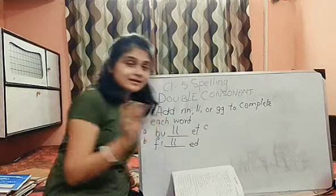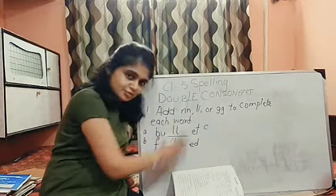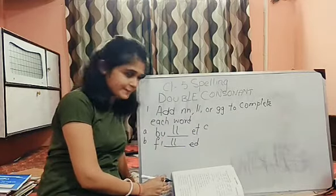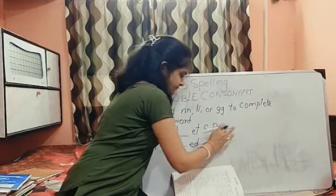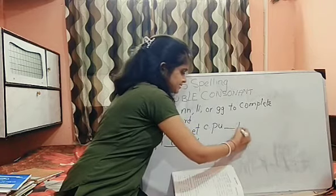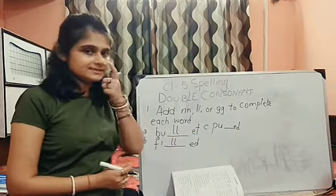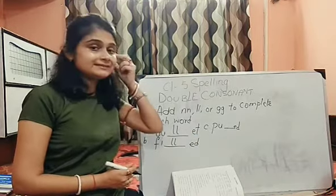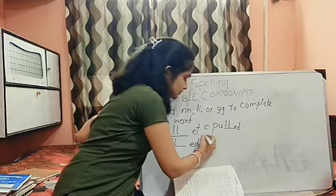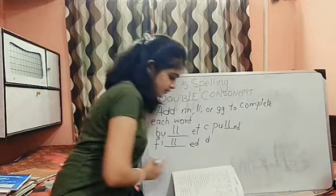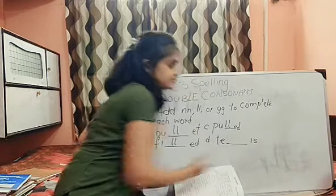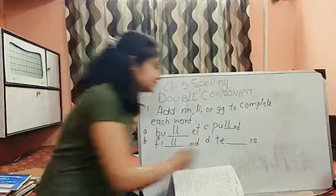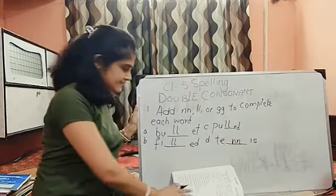Then number C. I am writing this way but you copy it down as you do it. P U then dash then E and D. We will write double L — pulled. Then number D: T E dash I S. Tennis. T E double N I S. Tennis.